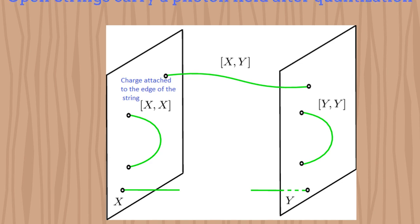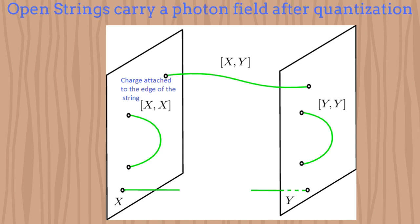Open strings also carry a photon field by themselves. In addition, they have an electric charge attached to their edges. The charge is only conserved when the open strings are attached to D-branes.